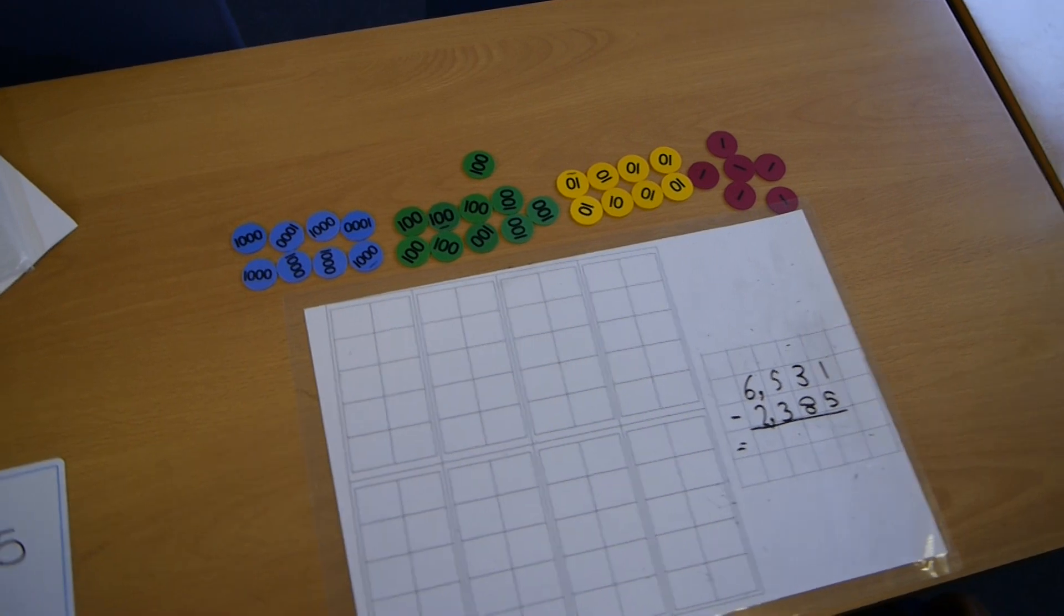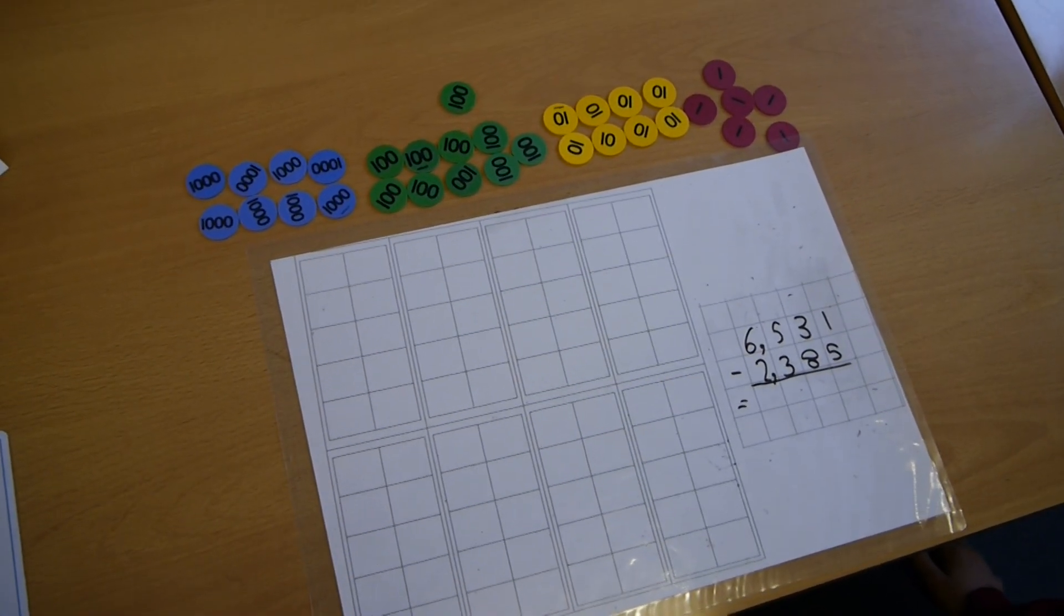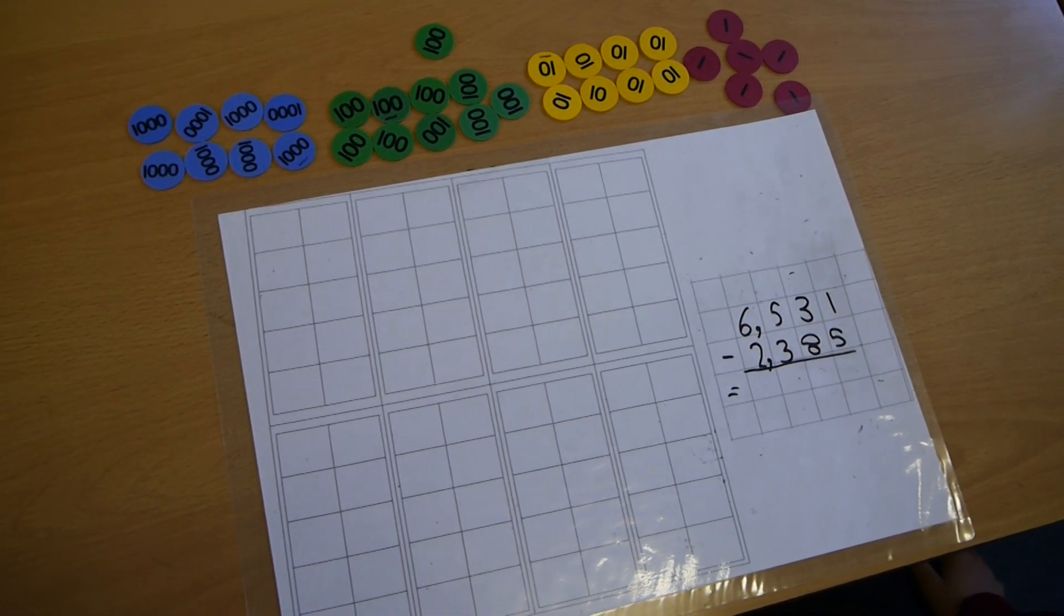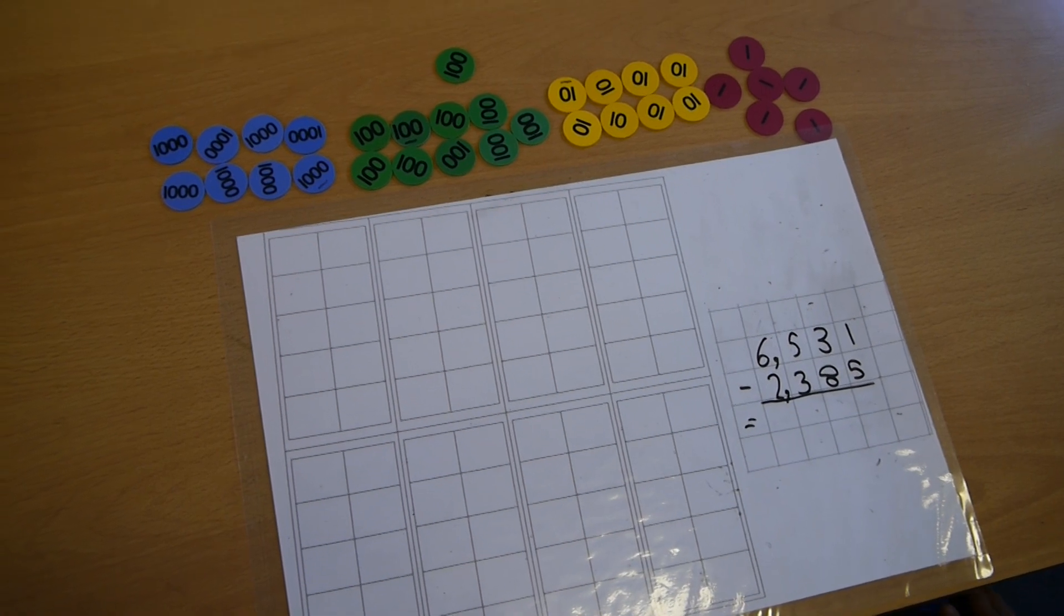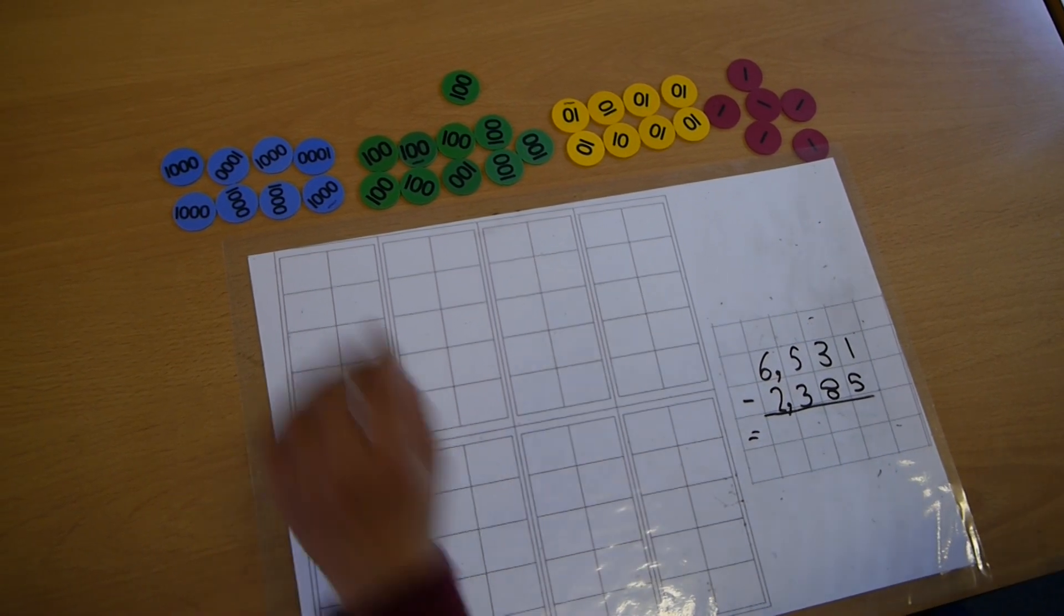So today we are doing 6531 take away 2385. First we need to make the number.